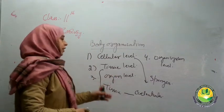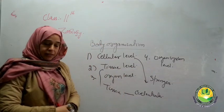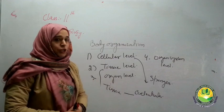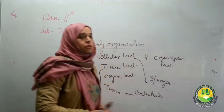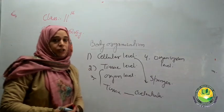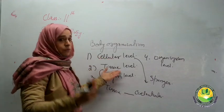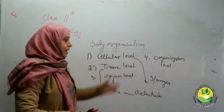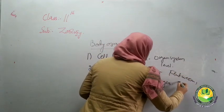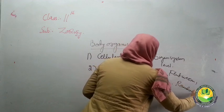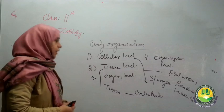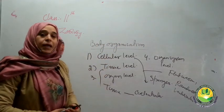At the organ level, aggregation of cells forms tissues, and different tissues combine to form organs which perform their functions. At the organ system level, different organs combine to form organ systems like the digestive, respiratory, and excretory systems. This organ system level can be seen in flatworms, roundworms, and in vertebrates including ourselves. So body organization includes these four levels of classification.